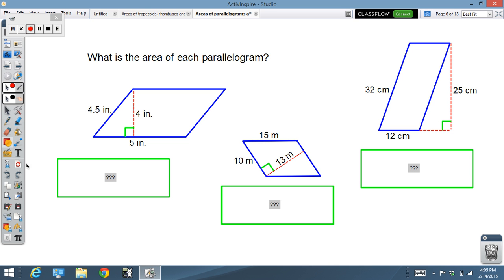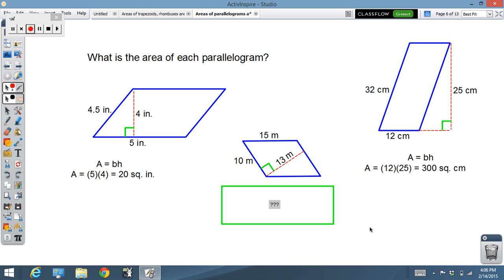What's the area of each parallelogram? First couple are going to be fairly easy. Base is five, height is four, area is twenty square inches. Remember for area our units turn from plain old inches to square inches. This one's also fairly easy, base is twelve, the length of altitude is twenty five.